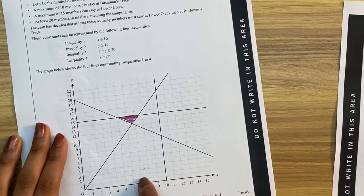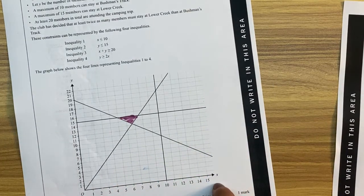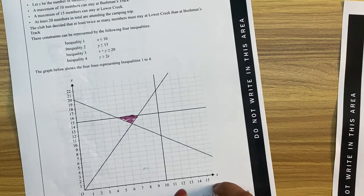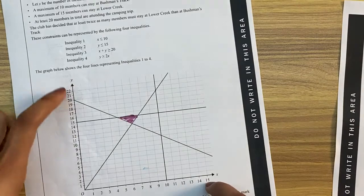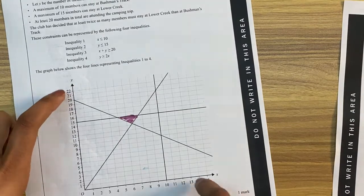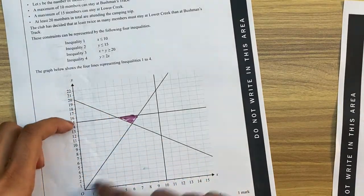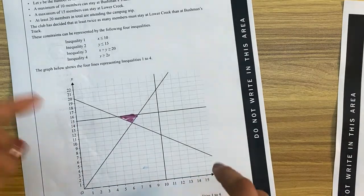So in this question, the x-axis is the number of members staying at Bushman's Track at a campsite. The y is the number of members staying at the Lower Creek campsite. And these constraints are all about how many people are able to stay at each campsite.